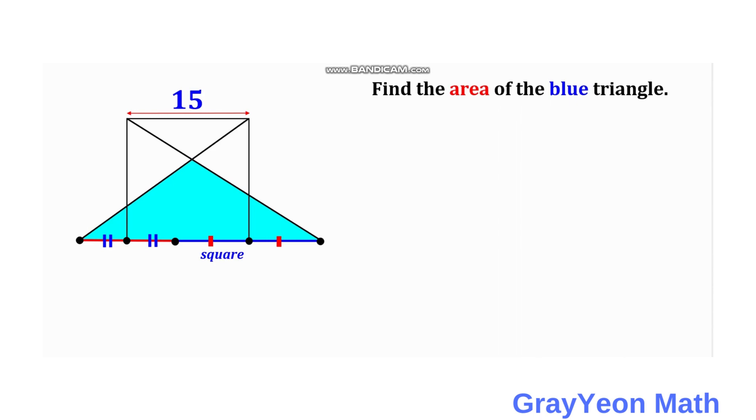First thing that we have to do is, since this is a triangle, we can draw a line from this intersection of these two diagonals inside the square. And because we need this height,